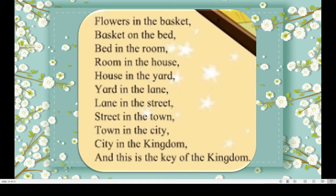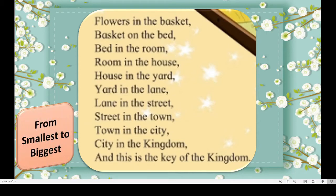Now this is our second stanza of the poem. Here we will read this. Whatever was there in the first stanza is reversed in the second stanza. Flowers in the basket. Basket on the bed. Bed in the room. Room in the house. House in the yard. Yard in the lane. Lane in the street. Street in the town. Town in the city. City in the kingdom. And this is the key of the kingdom. This is from smallest to biggest.